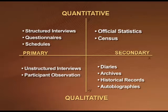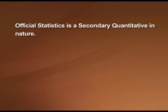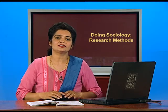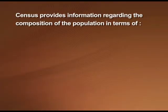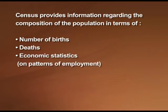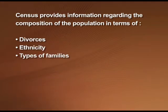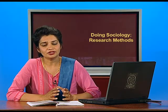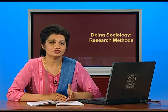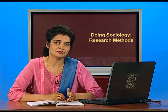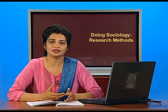Let us begin with official statistics. Official statistics is a secondary quantitative type of data or research method. The term official statistics refers to the mass of data collected by various governmental agencies. For example, a census is held at the national level every 10 years. Census provides information regarding the composition of population in terms of number of births, deaths, economic statistics on the patterns of employment, income, unemployment, expenditure, marriages, divorce, ethnicity, and types of families within a society. Government also regularly produces data about rates of crime, illness, suicide, etc. In addition to government-generated data, other institutions such as hospitals, economic organizations, and voluntary agencies provide important statistical information.